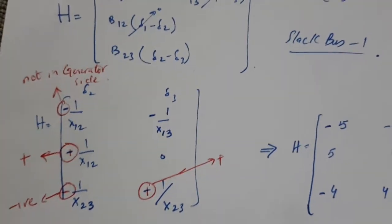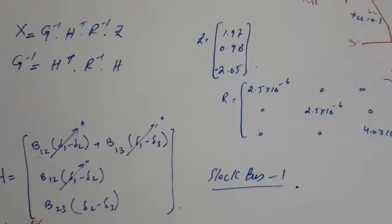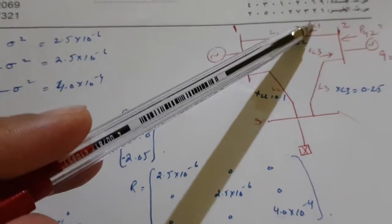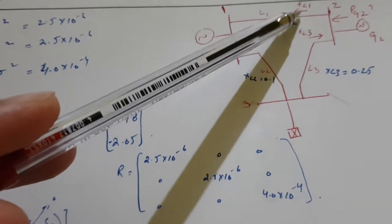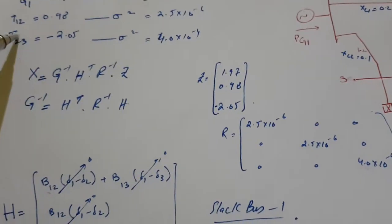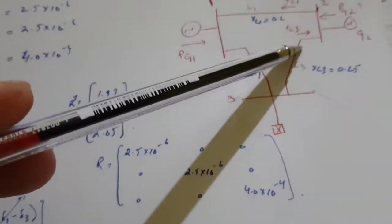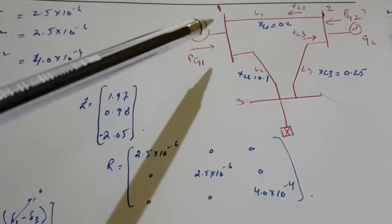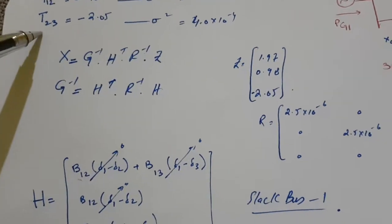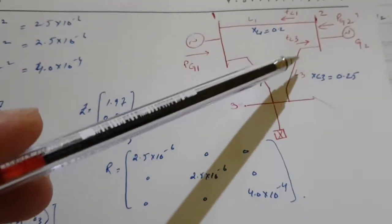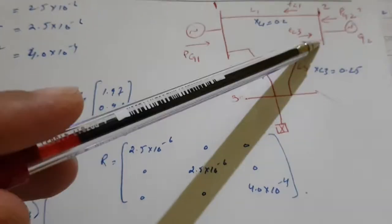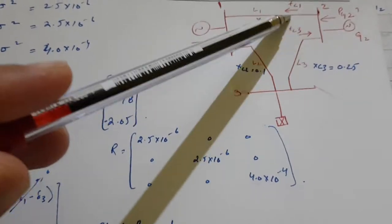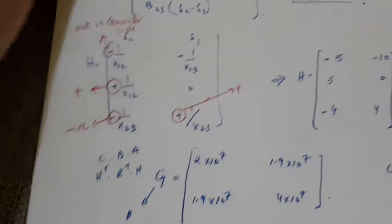As I mentioned in my previous video, when line flows T12 or T23 are given, you have to take care of the sign. In the question, T12 flows from 1 to 2, but in the diagram it flows from 2 to 1, so we take the minus sign for T12. Similarly, the question says T23 flows from 2 to 3, but in the diagram it is actually from 3 to 2 — the arrow on TL3 shows this — so we take the inverse signs in both these cases.